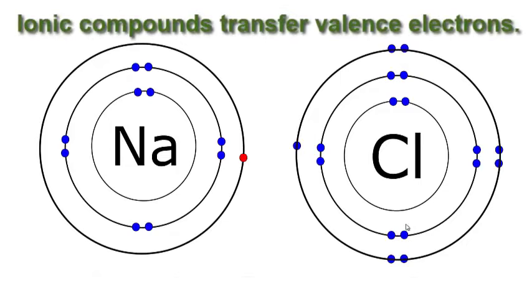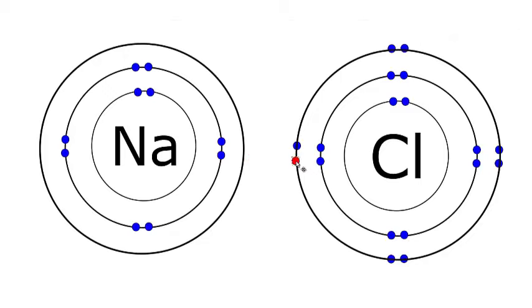So in this case, the sodium is going to lose its valence electron to the chlorine. The chlorine had seven. Now it has eight, an octet.